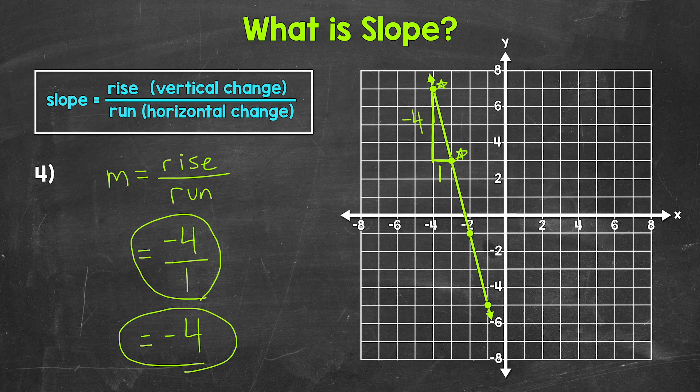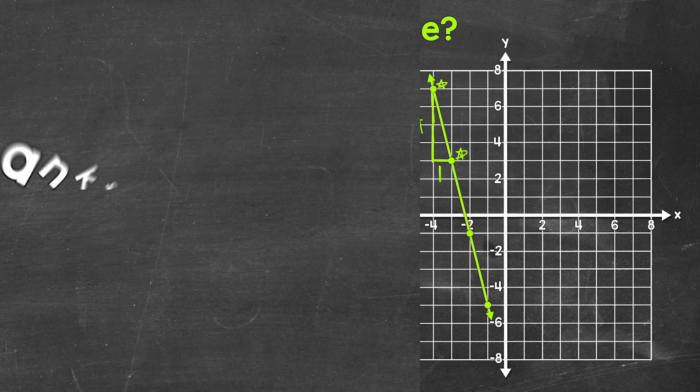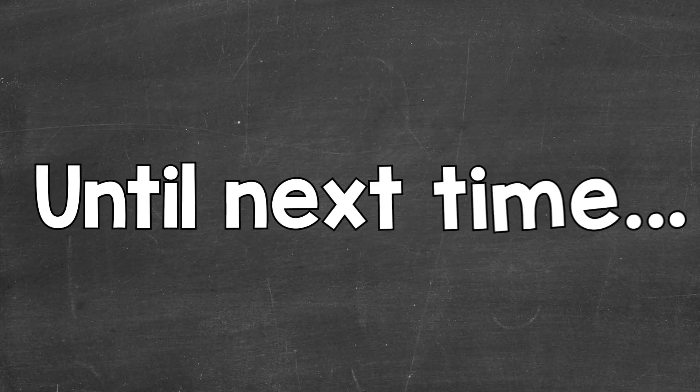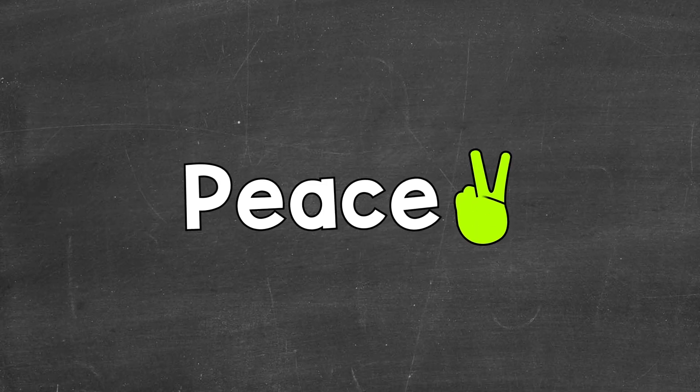So there you have it. There's a basic overview of what slope is. Just remember, slope measures the steepness of a line, and we use rise over run to find slope. I hope that helped. Thanks so much for watching. Until next time, peace.